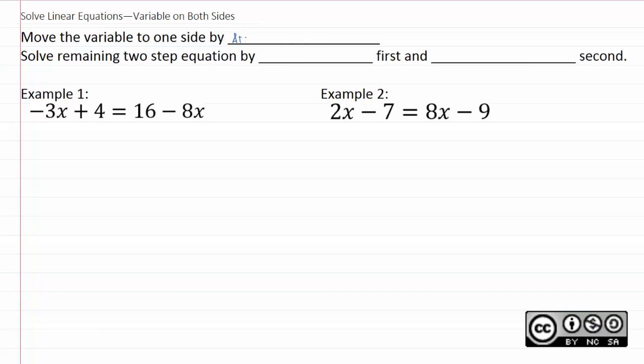So we move the variable to one side using addition or subtraction, just whatever is appropriate to whatever the problem demands. And so we solve the remaining two-step equation by adding or subtracting first and then multiply or usually divide by whatever our coefficient is.